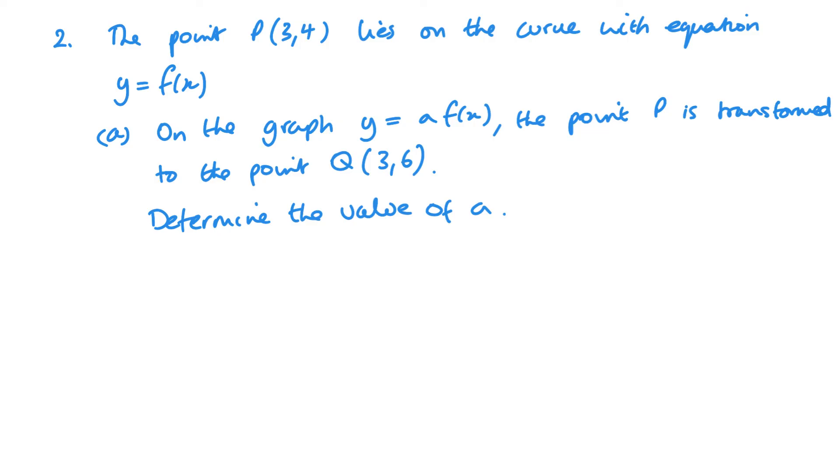So, with this one, based on the graph, we can see what we want to look at is that it's a on the outside, so it's affecting the y's and it's multiplying. So our x's are going to stay the same, as we can see, p and q, if we look at the y's, how do I get from 4 to 6? So what I'm doing is that a times 4 is going to be equal to that 6. So that means a is 6 over 4 or 3 over 2. And that is my value. Multiply that 4 by 1.5 and I will get my 6.